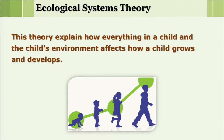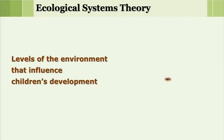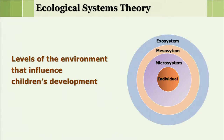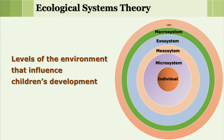His theory explained how everything in a child and the child's environment affects how a child grows and develops. Looking at the diagram, at the center we have a child or an individual, followed by different layers of environment: the immediate layer is the microsystem, followed by mesosystem, then exosystem, then macrosystem, and the outermost is the chronosystem.